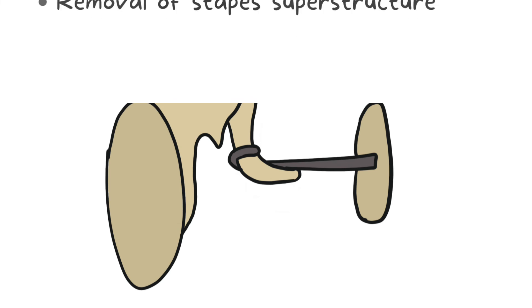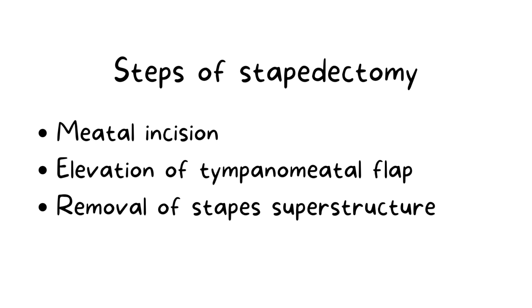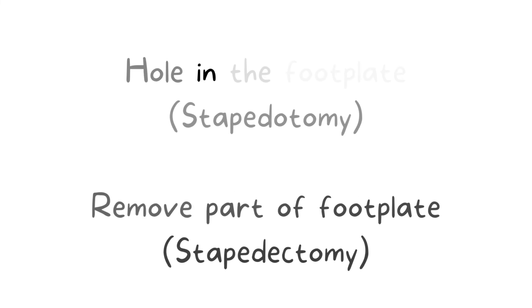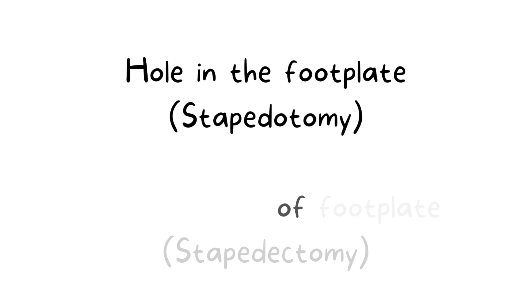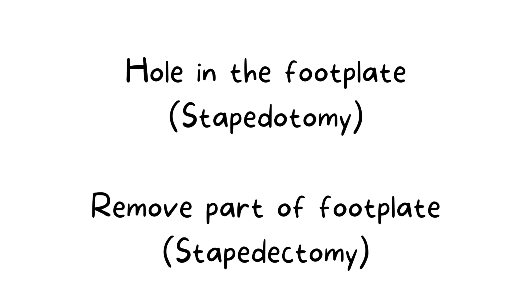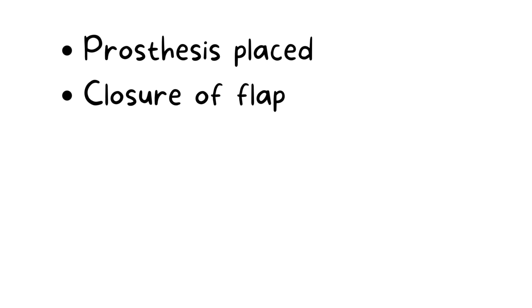The overview of steps of stapedectomy includes giving a meatal incision and raising a tympanomeatal flap. The stapes superstructure is removed. If doing a stapedotomy, a hole is put in the footplate for insertion of the prosthesis; or if it is a stapedectomy, part of the footplate is removed and replaced with the prosthesis. The prosthesis is then placed and the flap is closed.